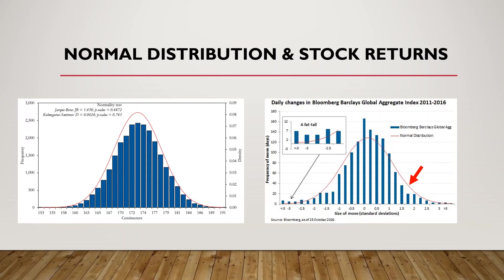This does not mean the Sharpe ratio is a bad risk-adjusted performance measure. It just means that when using the Sharpe ratio we have to be careful — there will generally be many small positive returns, and on average about once every 10 years there will be a very large financial crisis.